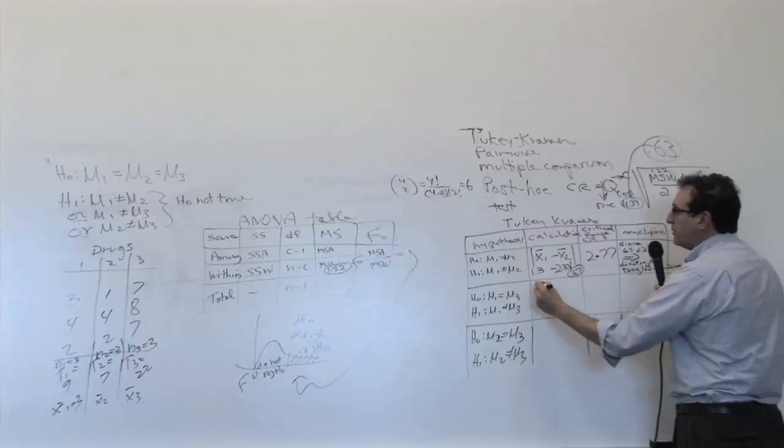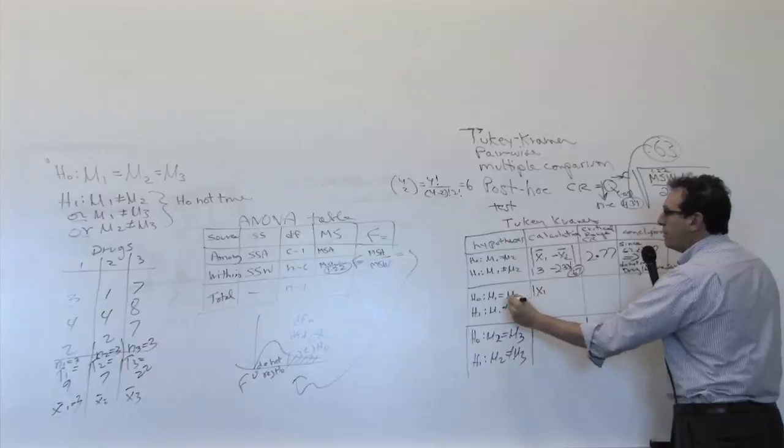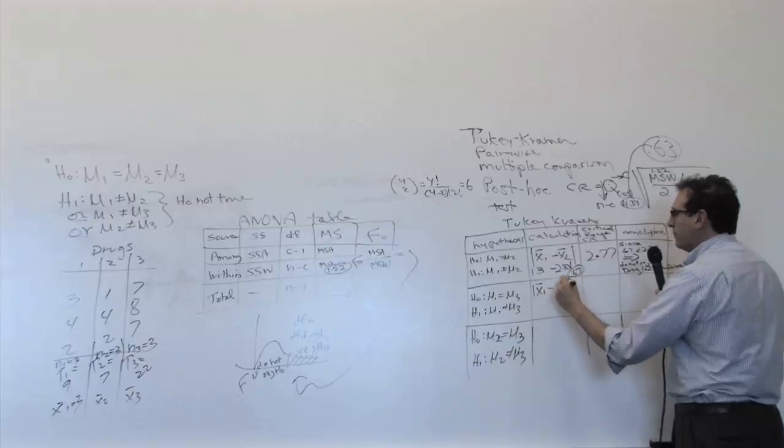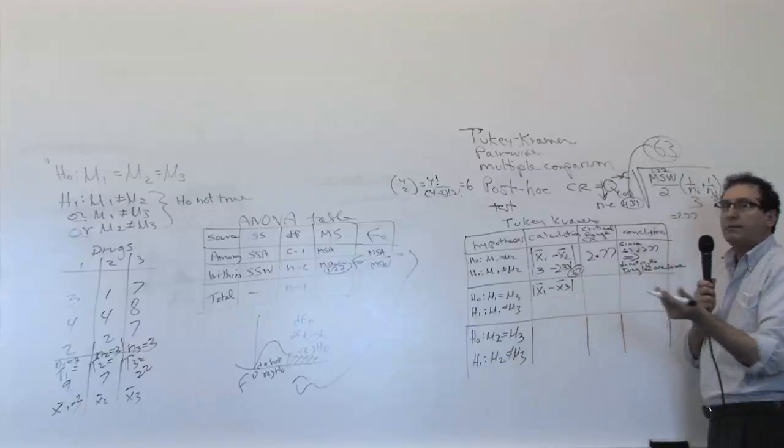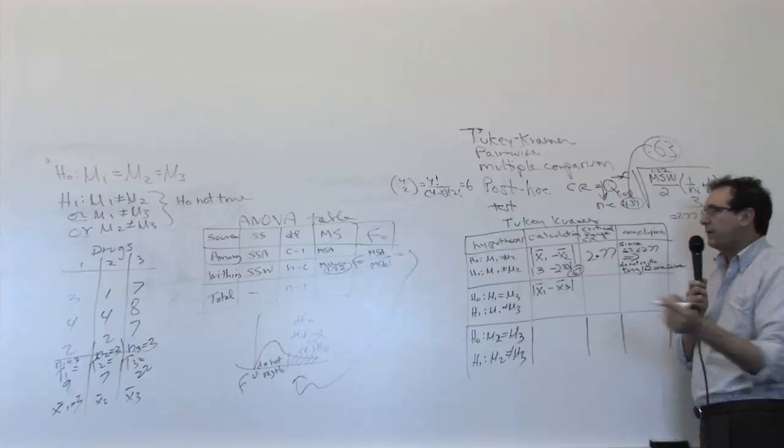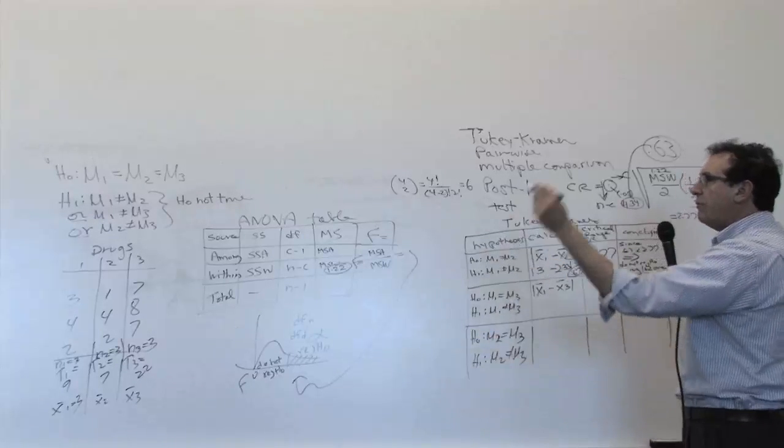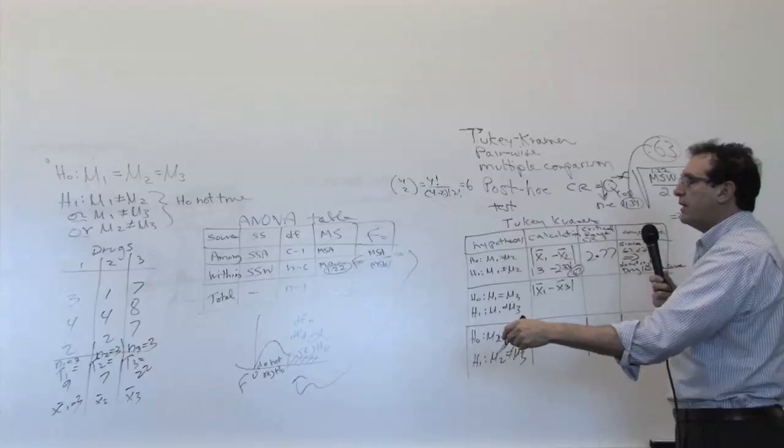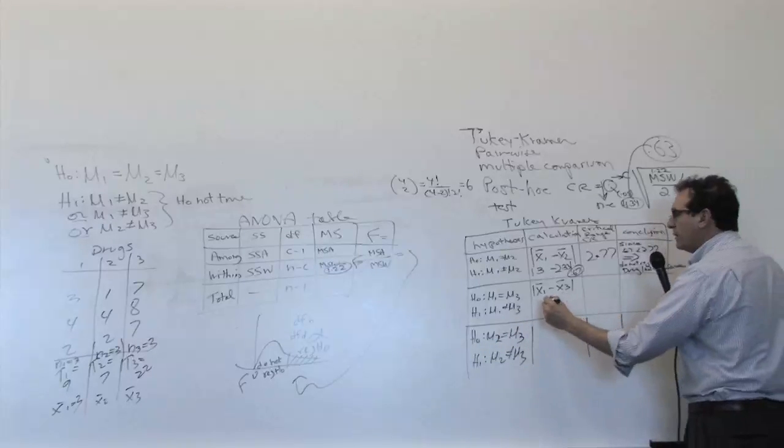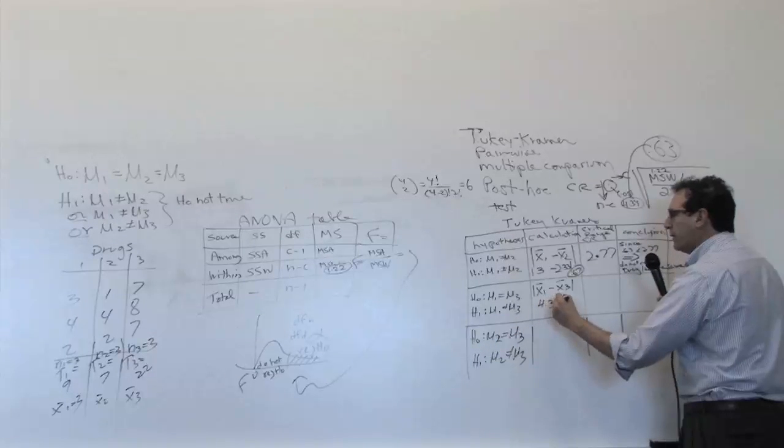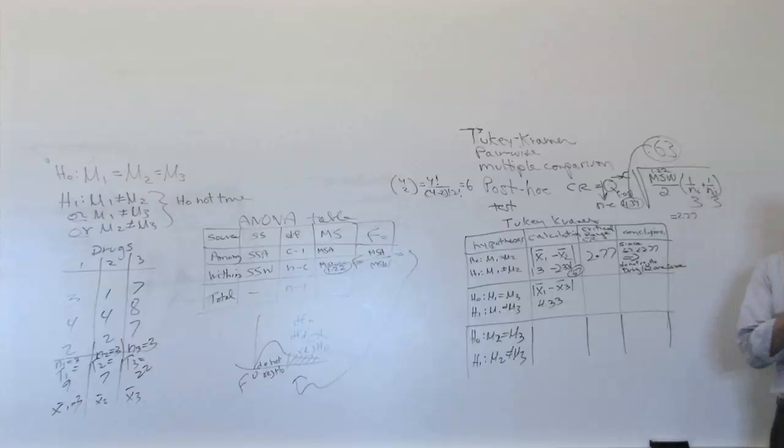How far apart is average 1 compared to average 3? Well, hopefully by now somebody did that calculation. Anybody do it yet? Average 1 is equal to 3. Average 3 is equal to 7.33. So I think it comes out to 4.33. Am I right about that? Okay. 4.33 is the difference of the averages.